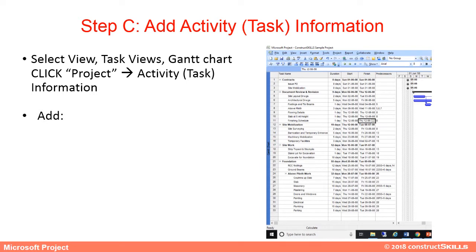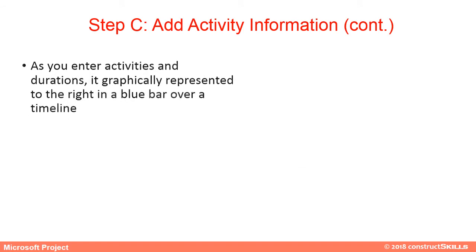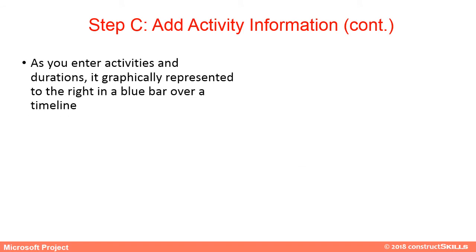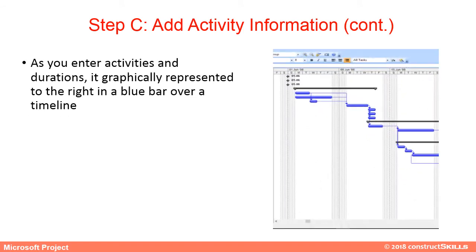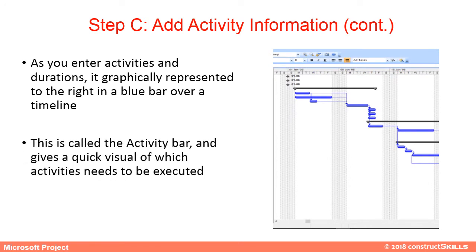Type a task name in the first empty task name field, then enter the duration required to complete it and the relations between tasks. Activities are called tasks in MS Project. As you enter activities and their durations, they will be graphically represented to the right as a blue bar over a timeline — this is called the activity bar, giving a quick visual of which activities need to be executed.